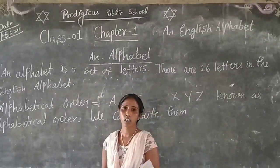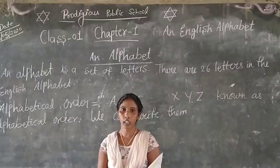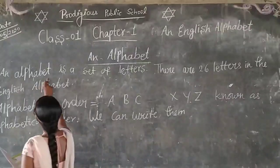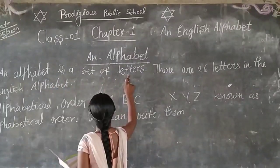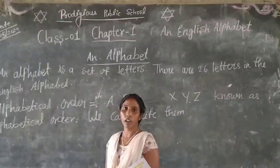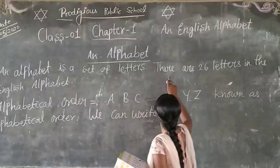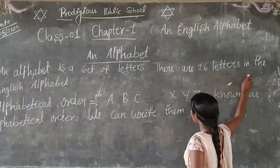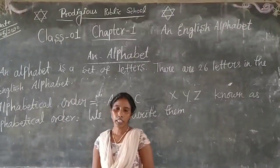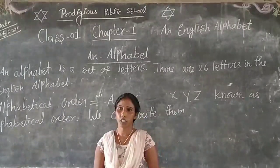Student, what is an alphabet? Alphabet kya holta hai? As we know, an alphabet is a set of letters. There are 26 letters in the English alphabet.